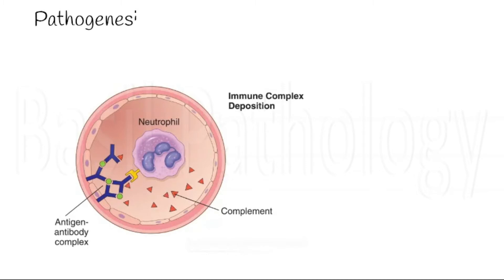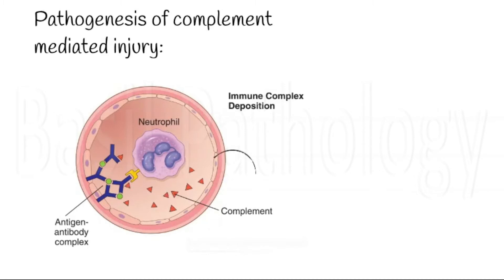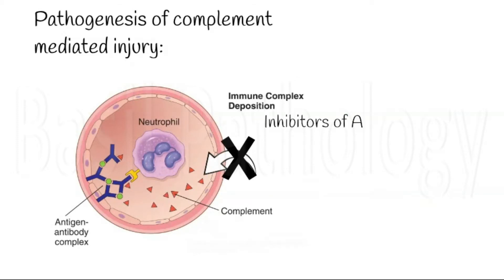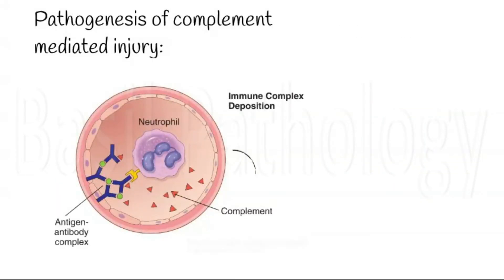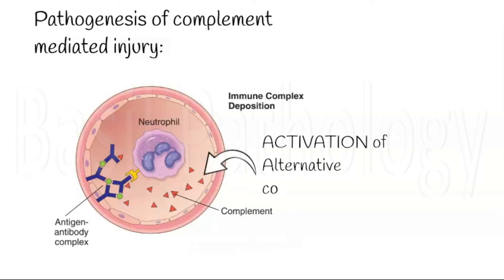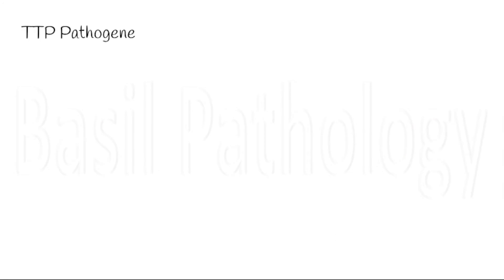Coming to the pathogenesis of complement-mediated HUS. There are inhibitors for complement activation like factor H, factor I, and CD46, which regulate the alternative pathway of the complement system. When they are mutated or destroyed, there will be abnormal activation of the complement pathway, releasing the membrane attack complex and causing endothelial injury.